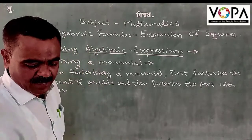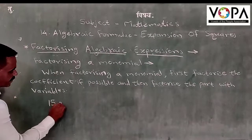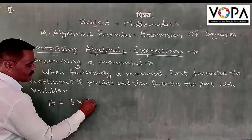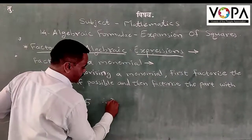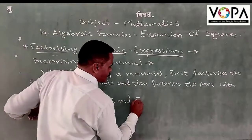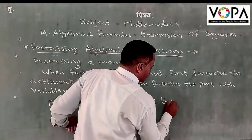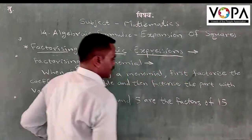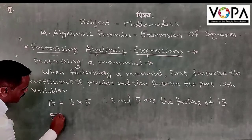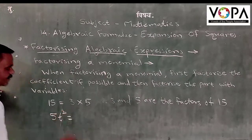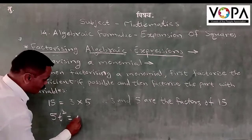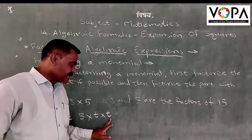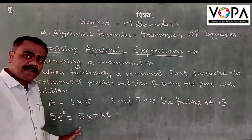Let us see one example. 15 is equal to — the factors of 15 are 3 and 5, that is 3 into 5, and therefore 3 and 5 are the factors of 15. Next, 5t² is equal to 5 into t into t. It means 5, t, and t are the factors of 5t².